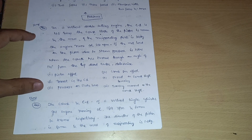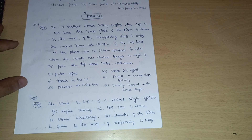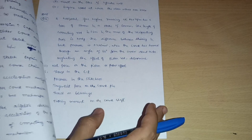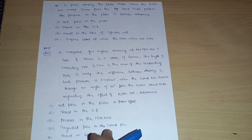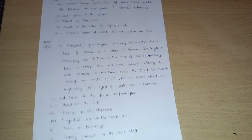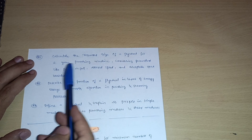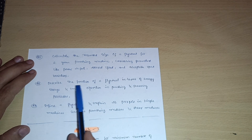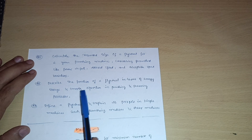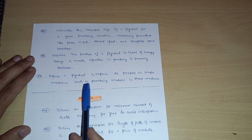There are some super important problems — make sure you take a screenshot of these problems as they are long ones. Take a screenshot of this portion as well. These are three important problems and they will definitely ask one question from this. From the flywheel section, cover theory questions like: calculate the required size of a flywheel for a given punching machine considering parameters like power input, desired speed, and acceptable speed variation; describe the function of a flywheel in terms of energy storage and smooth operation in punching and shearing processes; define a flywheel and explain its purpose in punching and shear machines.